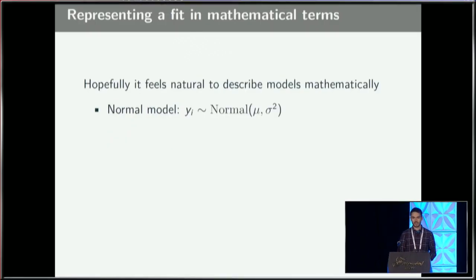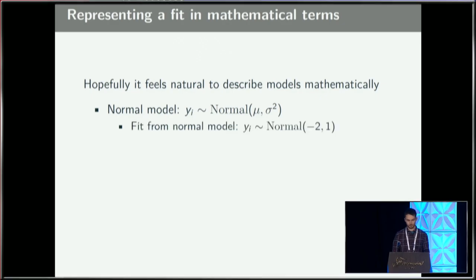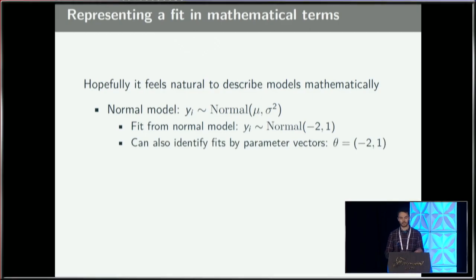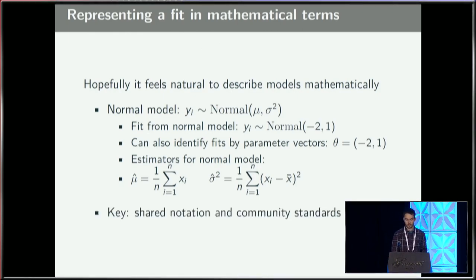If you have spent some time in a stats class or reading tutorials online, you will probably see things like this. There's a yi using a tilde, meaning yi is a random variable with a normal distribution. You can write this down and there's standard notation for picking a normal distribution, representing parameters, and writing down estimates. There are these three key objects: models, individual fits, and estimators. The takeaway is that in math, we have shared notation and community standards for how we write these things down.